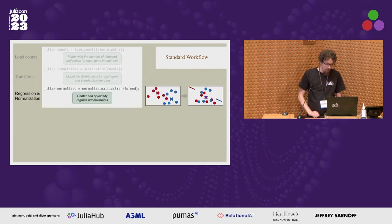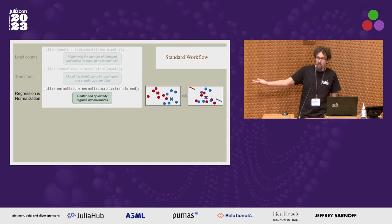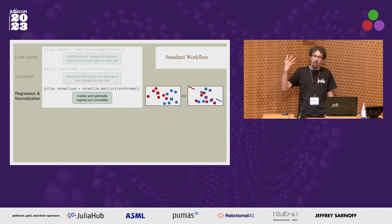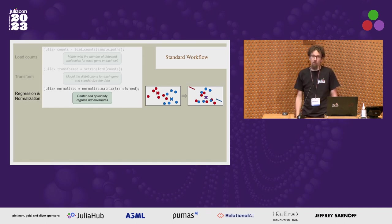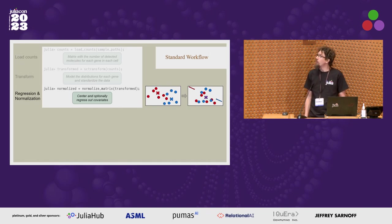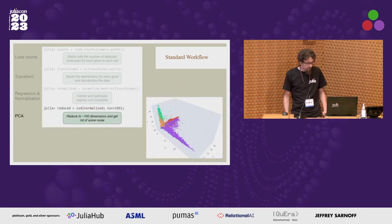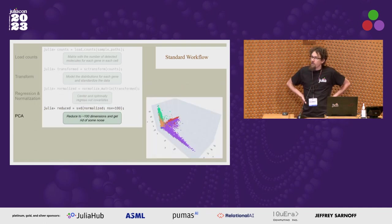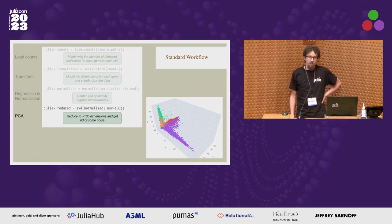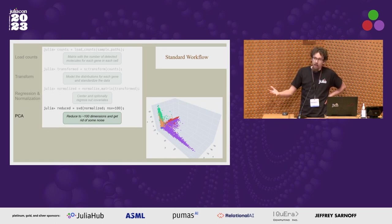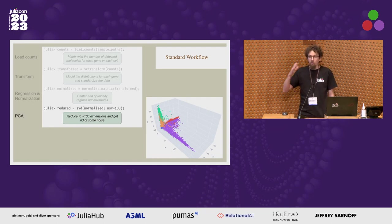Next, you want to center the data — remove the mean of each gene — but typically you also have covariates to remove spurious patterns, such as the fraction of mitochondrial genes active, which is not a very useful signal. So there's always some normalization and regression. A key step is performing SVD or principal component analysis to get the data down to maybe 50–100 dimensions, removing noise and making the data much more manageable.